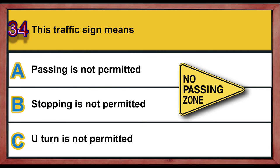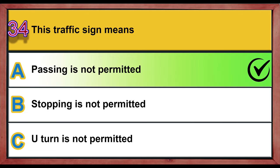Question 34. This traffic sign means: A. Passing is not permitted. B. Stopping is not permitted. C. U-turn is not permitted. Correct answer is A: Passing is not permitted.